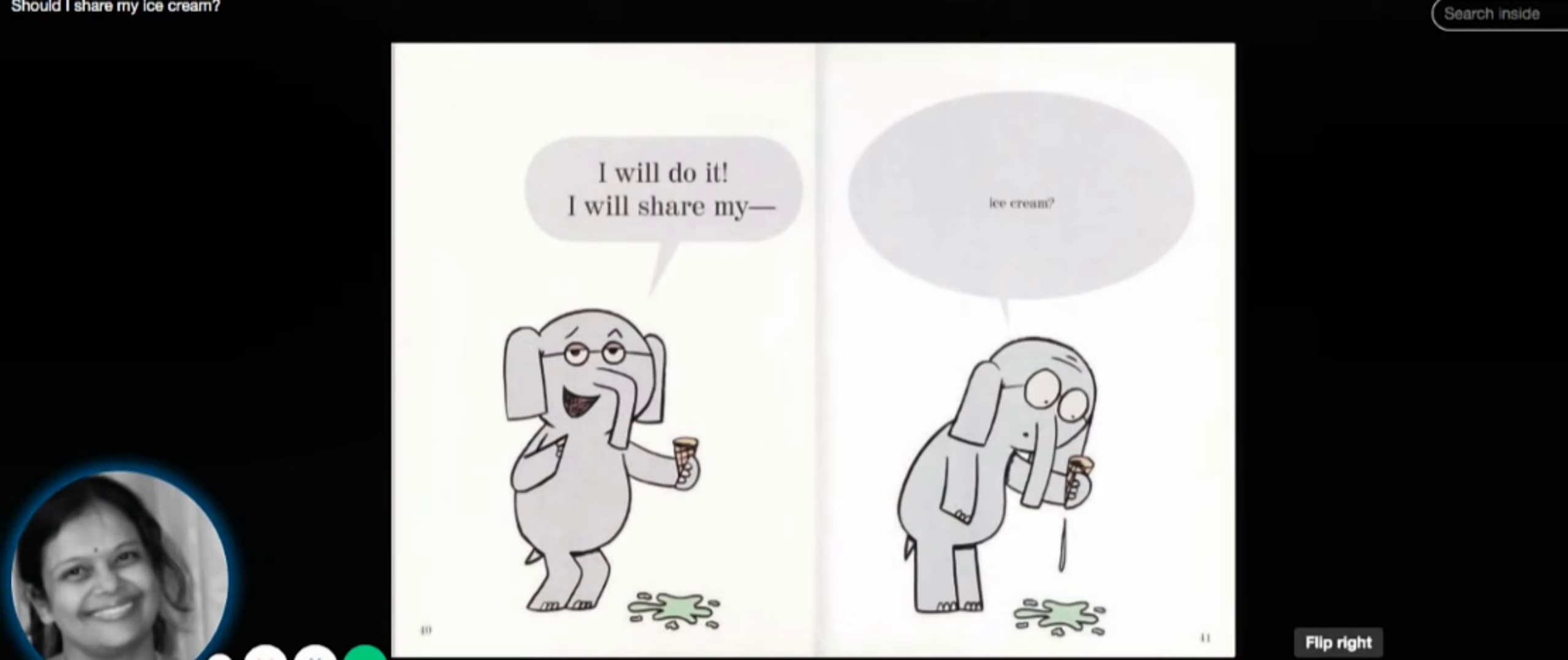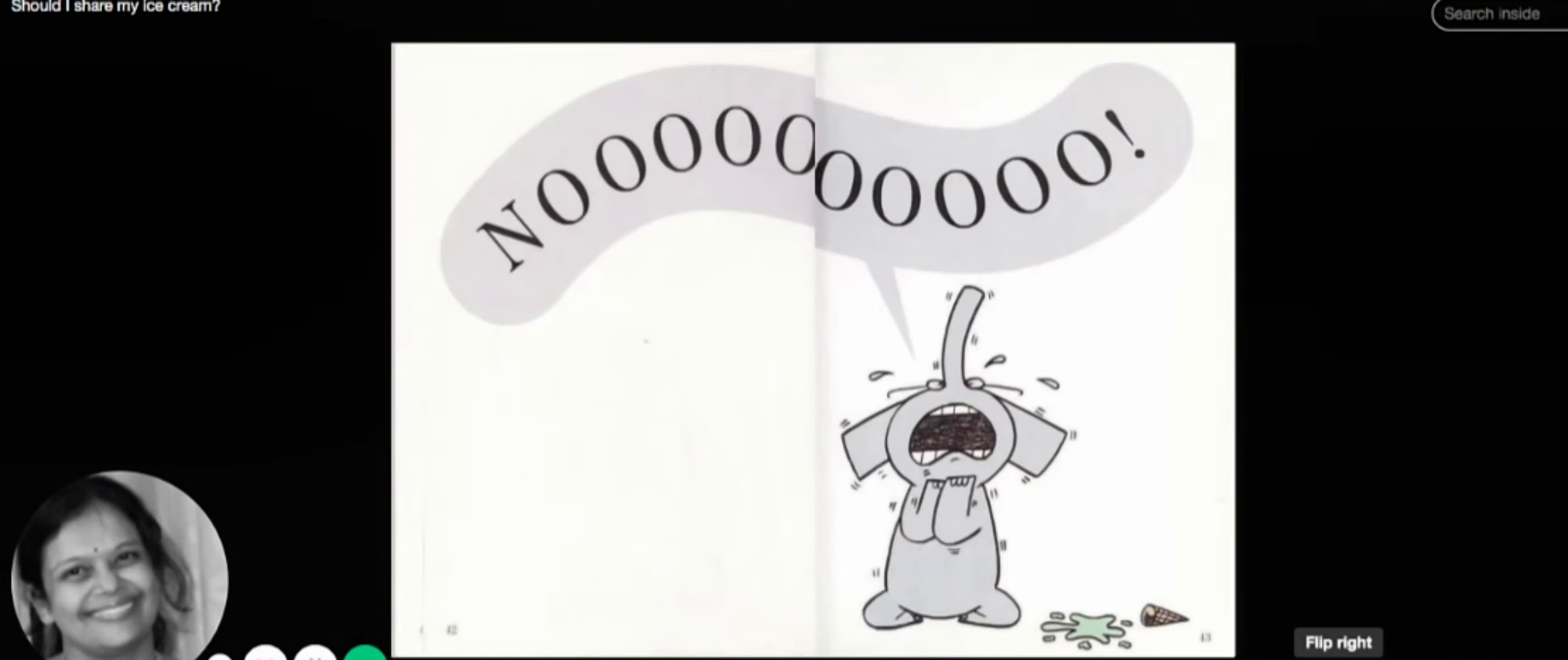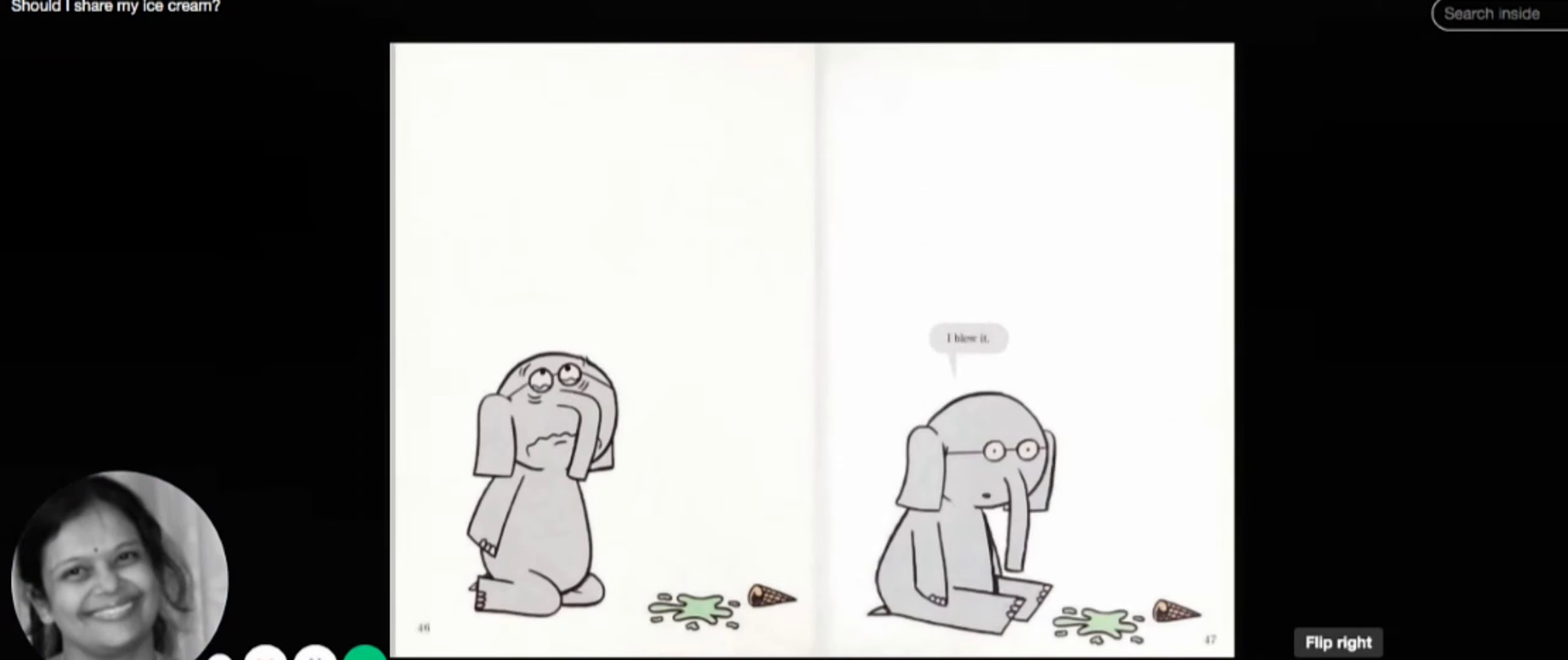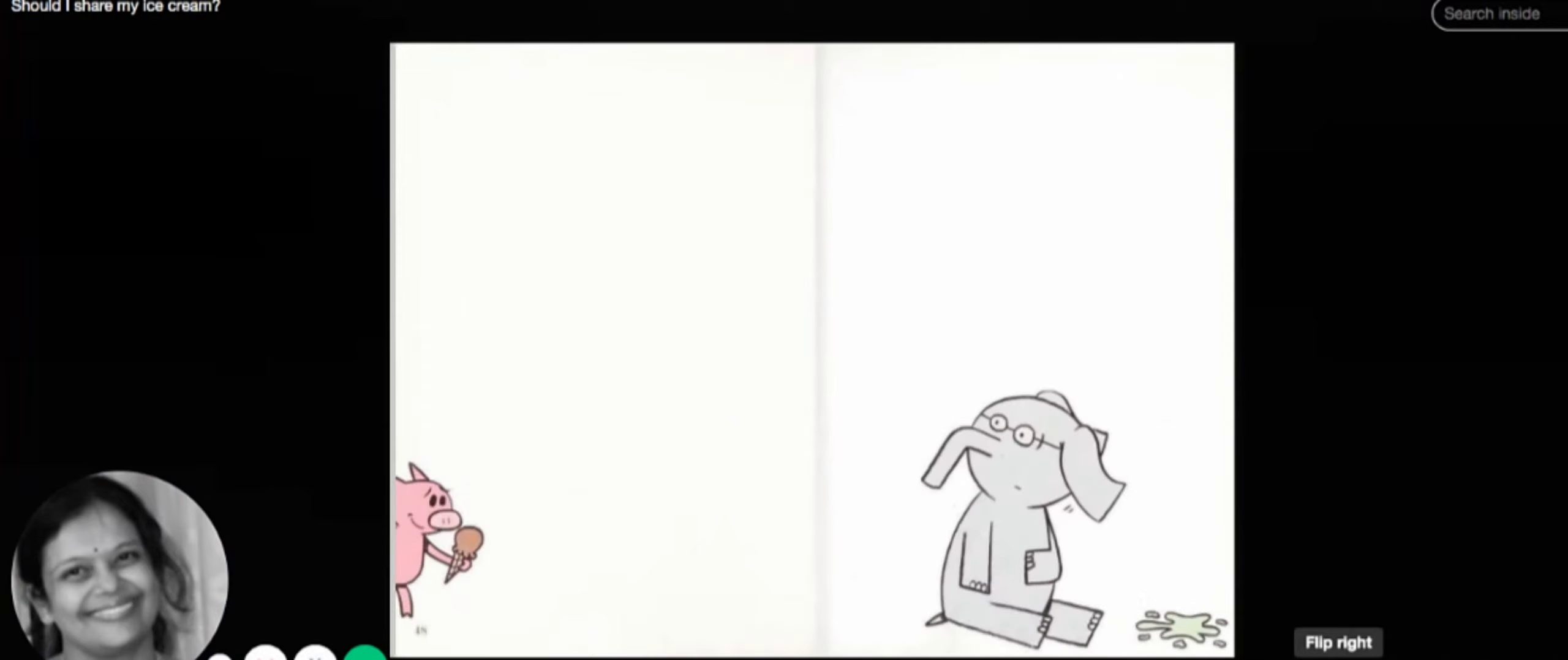It's all melted! It's become a liquid and it has fallen to the ground. Now can he eat the ice cream? Can he give it to Piggy? No! He's very sad. The cone is on the ground, the ice cream in liquid form is also on the ground. He's shouting, 'No! Now Piggy cannot have any of my ice cream! Now I also cannot have any of my ice cream!' He's sad. 'I blew it!' And he's crying.